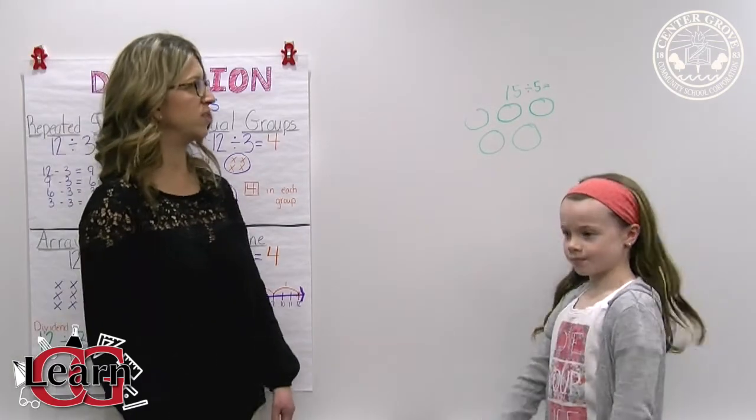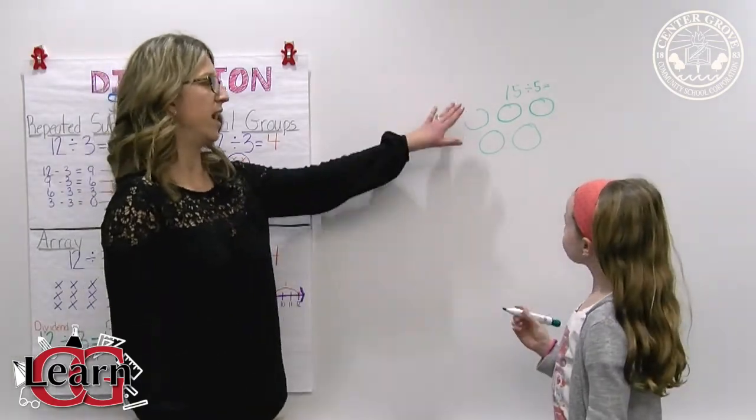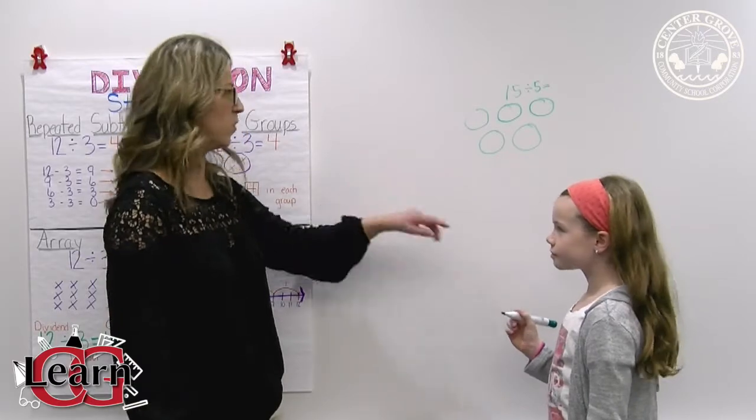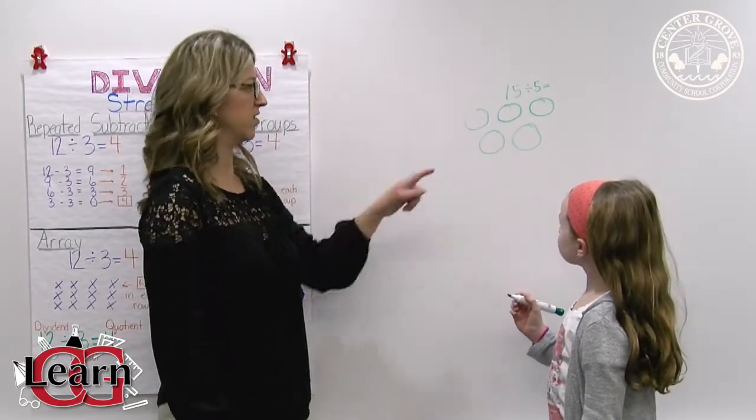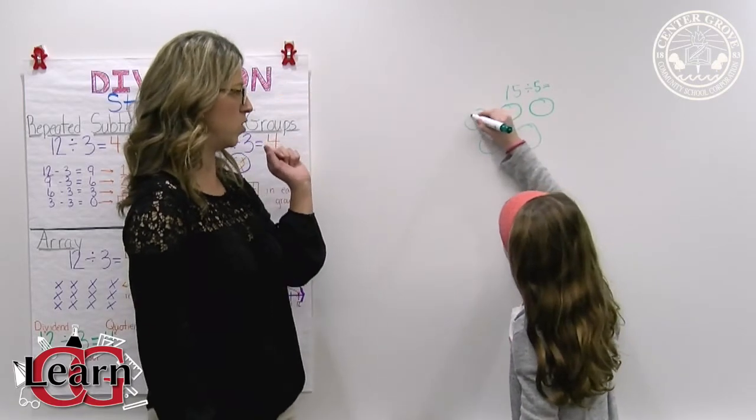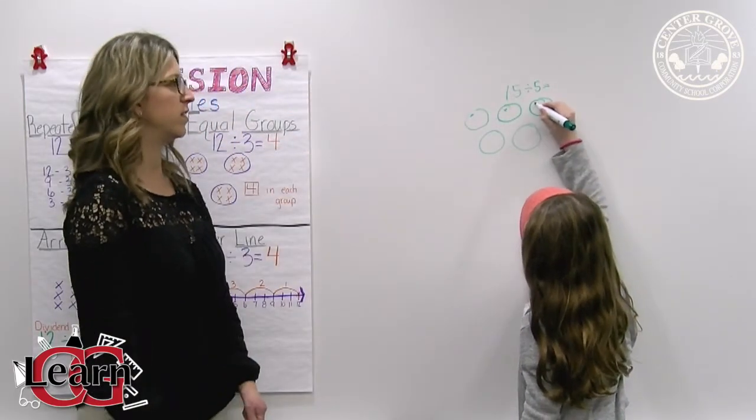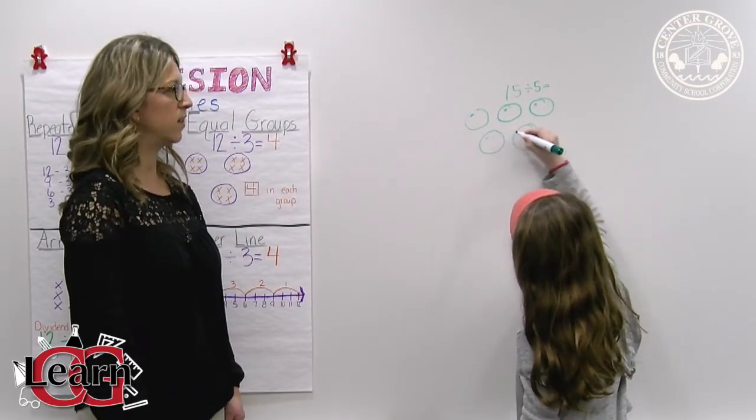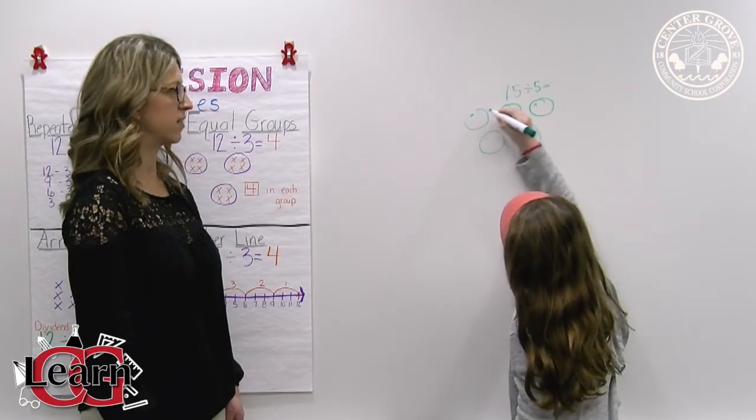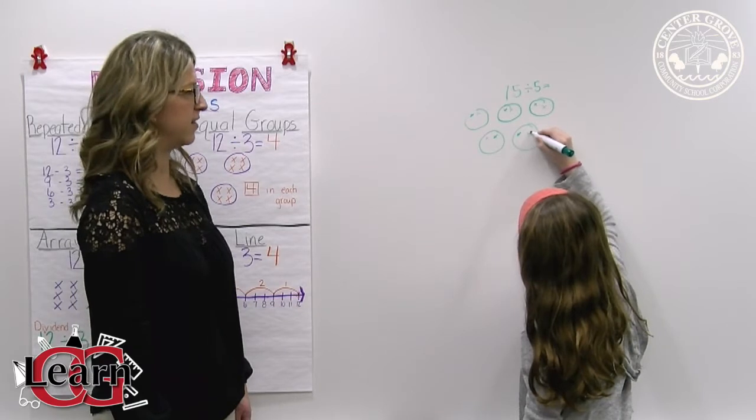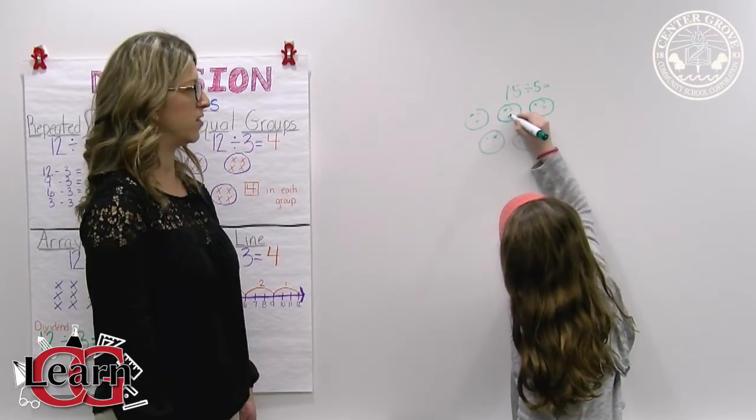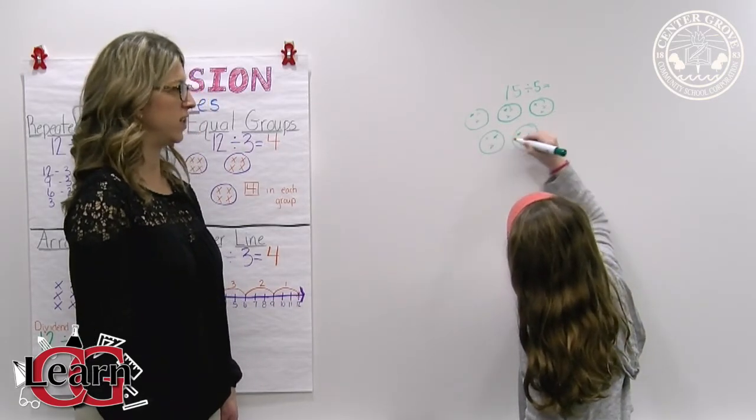And then the next thing she's going to do is she's going to put an X, a dot, a circle, whatever you want in each circle until we get to 15. So she's going to start with the first one, 1, 2, 3, 4, 5, 6, 7, 8, 9, 10, 11, 12, 13, 14, 15.